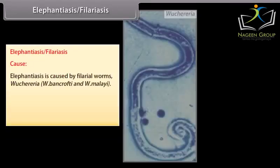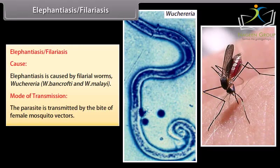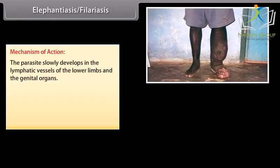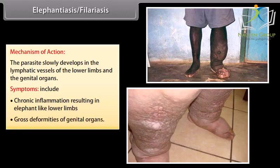Elephantiasis or filariasis is caused by filarial worms Wuchereria bancrofti and W. malayi. Mode of transmission: the parasite is transmitted by the bite of female mosquito vectors. Mechanism of action: the parasite slowly develops in the lymphatic vessels of the lower limbs and the genital organs. Symptoms include chronic inflammation resulting in elephant-like lower limbs and gross deformities of genital organs.